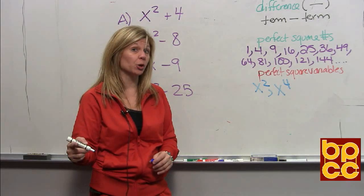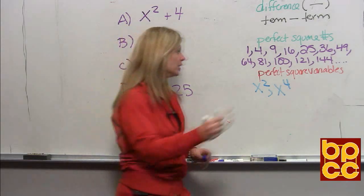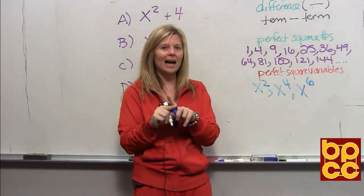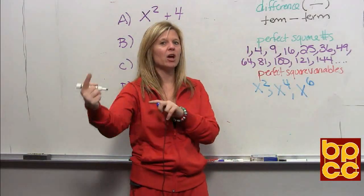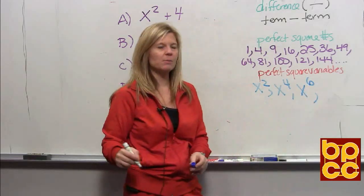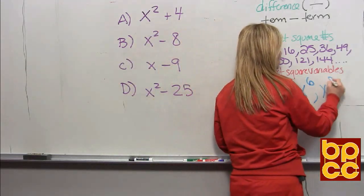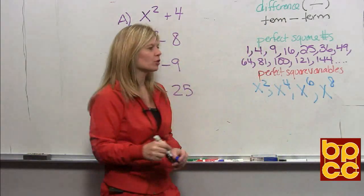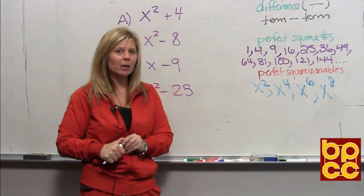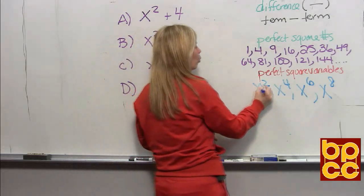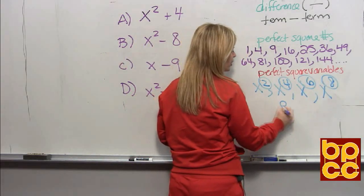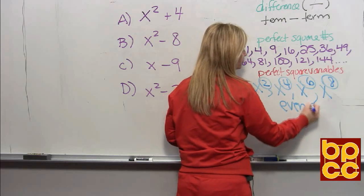What is x cubed times x cubed? It's x to the sixth, because when you multiply letters you add exponents — three and three make six. What's x to the fourth times x to the fourth? X to the eighth. What you should notice here is there's a pattern. If a variable is a perfect square, what do you notice about all their exponents? That's right — they're even numbers.